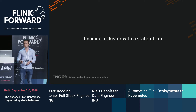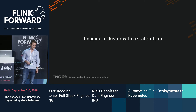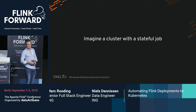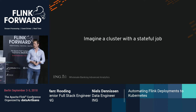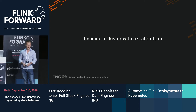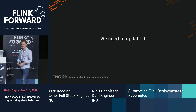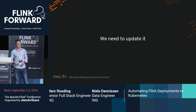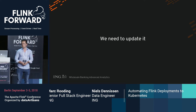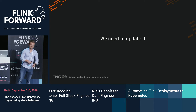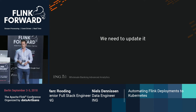Imagine you've set up a job manager and a few task managers, developed within a sprint the first working version which you take into production. A few sprints later everything's still working fine, then the product owner comes up and says: 'Hey, I've got a cool new feature — we need to change the state for that, we need to update the job.' Updating a job is one of the big parts already discussed at this conference, particularly state management.